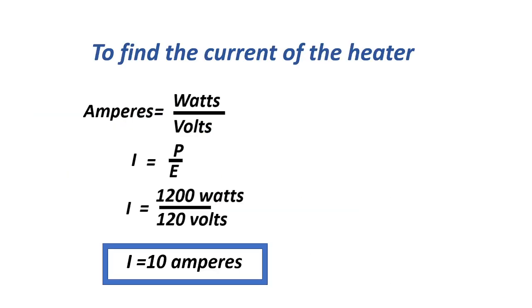To find the current of the heater: amperes equals watts over voltage, or I equals P over E. Equals 1200 watts over 120 volts. Our current is 10 amperes.